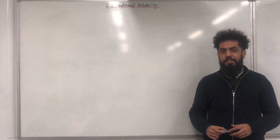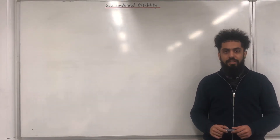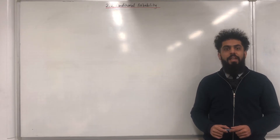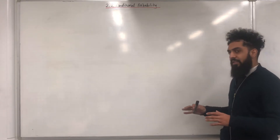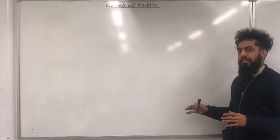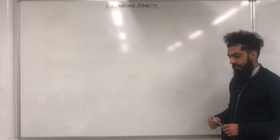Welcome back. In this video I'll be looking at 2.2 Conditional Probability. 2.2 represents Chapter 2, Section 2 of the Pearson A Level Maths Applied Maths Year 2 textbook. I'm going to start off this teaching video by going through the set notation for conditional events.